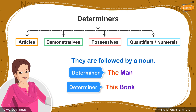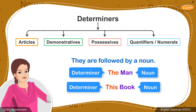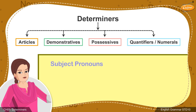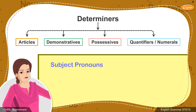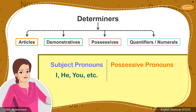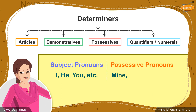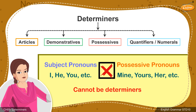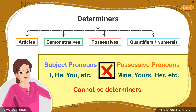Determiners are followed by a noun. Students, you must know that subject pronouns like I, he, you, etc., and possessive pronouns like mine, yours, her, etc., cannot be considered as determiners since they are not followed by nouns.